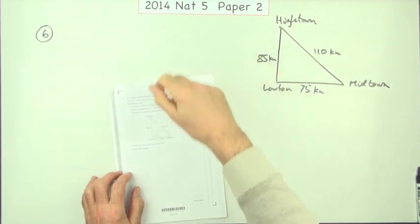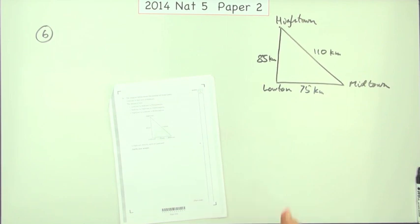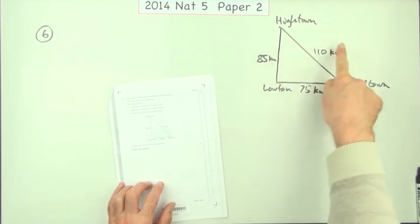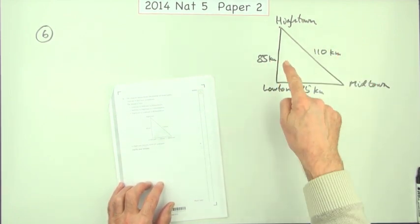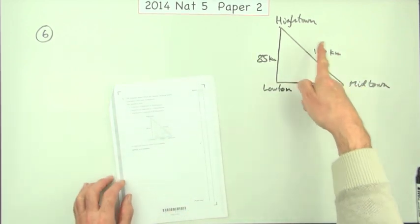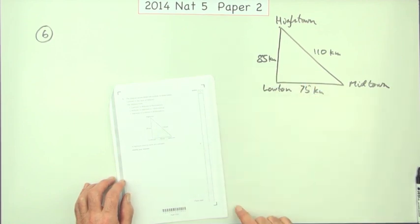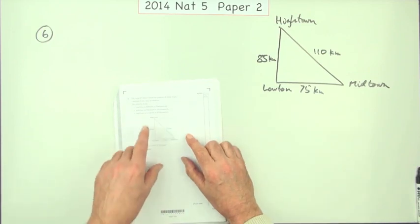Question 6 from Paper 2 of the 2014 National 5. Looks like a Pythagoras question except you've got all the sides. Normally in a Pythagoras question it tells you you've got a right angle triangle, gives you two sides, and asks for the third. So this must be the other way round. Is this a right angle triangle? It'll be the converse of Pythagoras and indeed that's what it says.